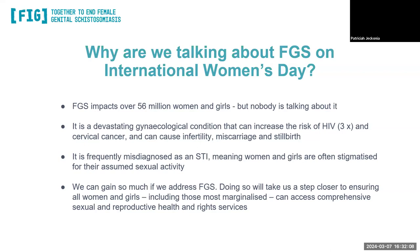We can gain so much if we address FGS. Preventing HIV — having lesions exposes a bigger surface area to the HIV virus, making you highly likely to get infected. Doing this gets us a step closer toward ensuring that girls and women, including those in marginalized regions, have access to comprehensive sexual and reproductive health and rights services — not treating FGS as a standalone disease, but as a component of a comprehensive package for girls and women, so that by 2030 we have zero new HIV infections amongst girls and women.